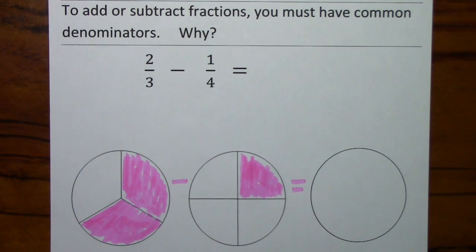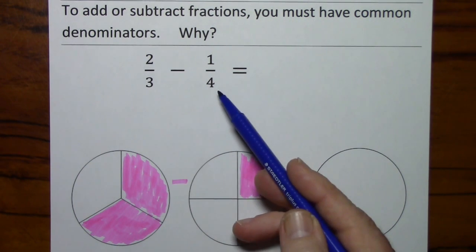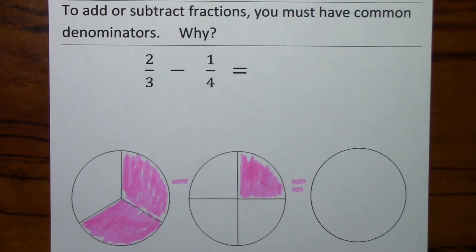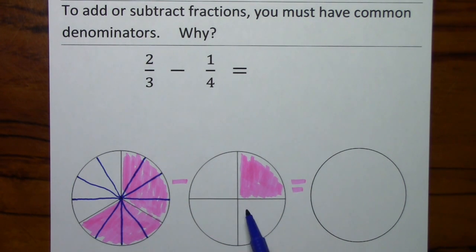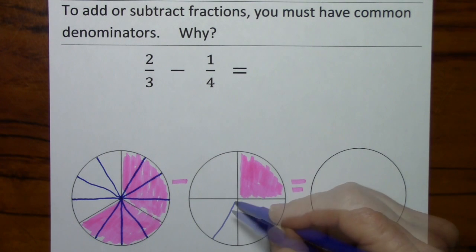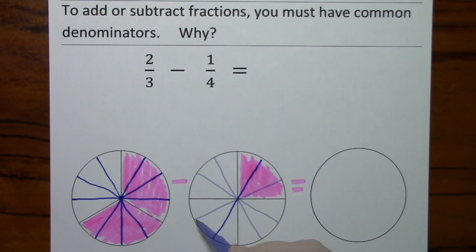But if each of these circles was divided into the same number of slices, then I would know how many slices to divide this into and how many would remain. So the least common denominator of 3 and 4 is 12. 12 is the smallest number that 3 will go into, that 4 will also go into. So I'll divide this circle into twelfths, and I'll divide this circle into twelfths, which means I'll divide this one into twelfths.